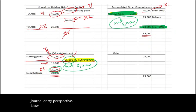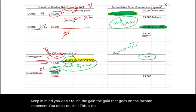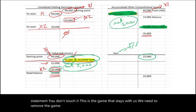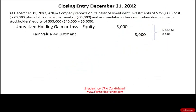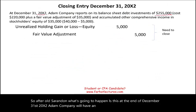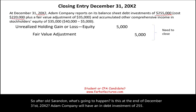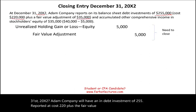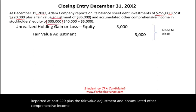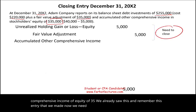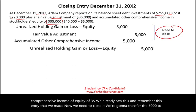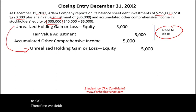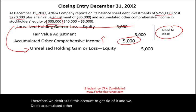Keep in mind: you don't touch the gain on the income statement. That realized gain of $25,000 stays as is. What we needed to remove was the gain sitting in OCI. After all is said and done, at December 31, 20X2, Adam Company has a debt investment of $255,000 — reported at cost $220,000 plus fair value adjustment — and accumulated other comprehensive income of $35,000 in equity. We close the $5,000 by debiting unrealized holding gain and debiting accumulated other comprehensive income $5,000.